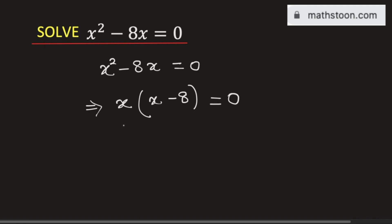We know that if the product of two numbers is equal to 0 then they are individually 0. Therefore either x is equal to 0 or x minus 8 equals to 0. From this we get x is equal to 8.